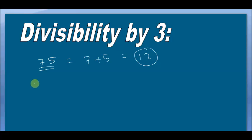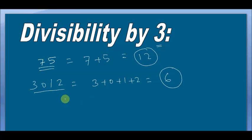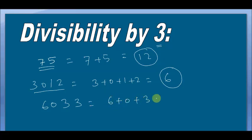Why is this rule useful? Suppose I take a large number. You can say very quickly that it is divisible by 3 by checking the addition of its digits. For example, 3 + 0 + 1 + 2 = 6. As 6 is divisible by 3, therefore this number is also divisible by 3. Another example: the digits sum to 12, and as 12 is divisible by 3, the number is also divisible by 3.